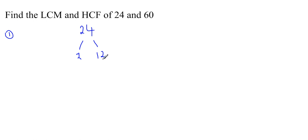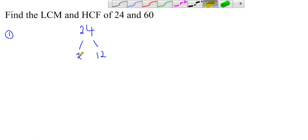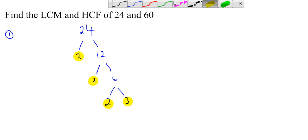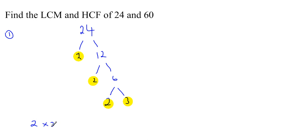As soon as you get to a prime number, you just mark it off, because prime factors are what we're looking for. So the other number, 12, is not prime — it can be broken down further into 2 times 6. 2 is prime, so I'll mark that off. 6 is not prime, so that can be broken down into 2 times 3. Both 2 and 3 are prime. So we've found the prime factors of 24. Writing them in ascending order: 2 times 2 times 2 times 3. Checking: 2 times 2 is 4, times 2 is 8, times 3 is 24. Correct.